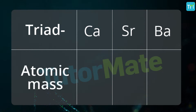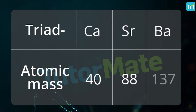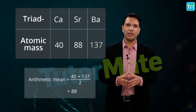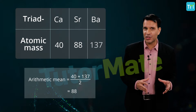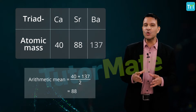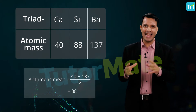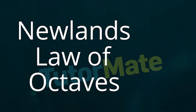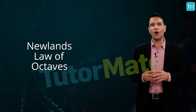The atomic masses of calcium, strontium, and barium are 40, 88, and 137 respectively. If we calculate the arithmetic mean of the atomic masses of the first and third elements, it comes to 88 — confirming Döbereiner's Law of Triads.